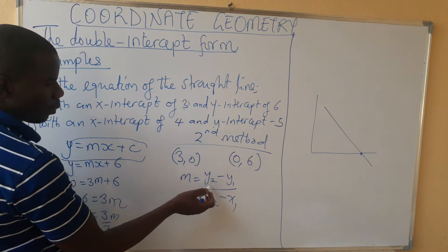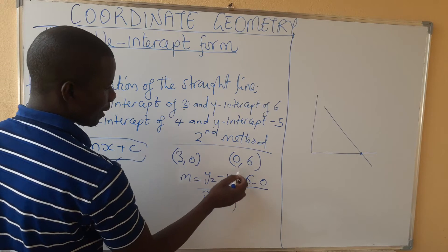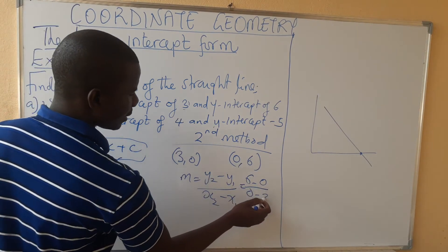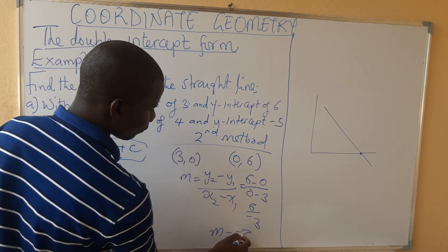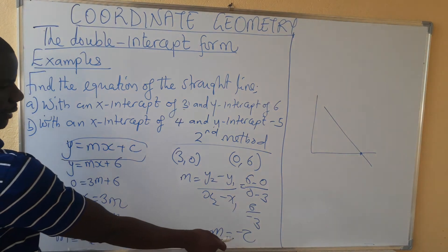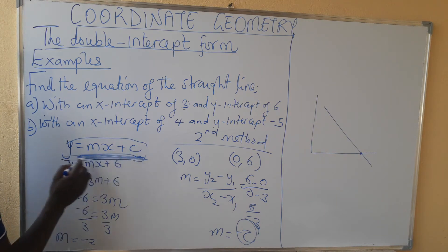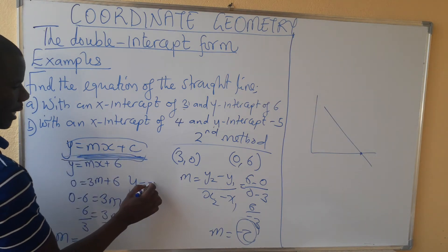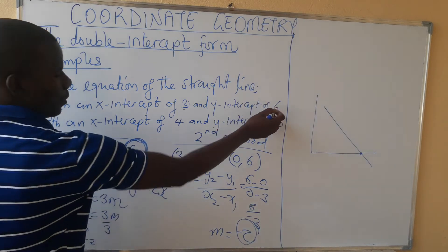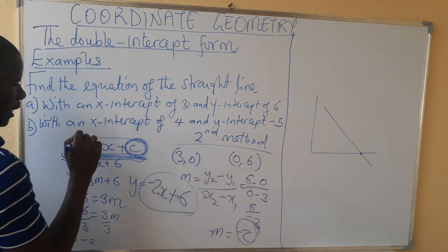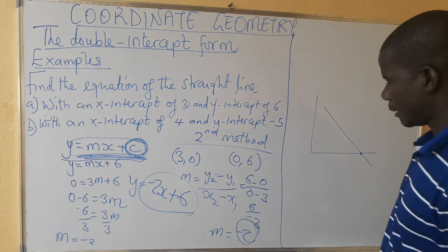Using the gradient formula: 6 minus 0 over 0 minus 3 gives 6 over negative 3, which equals negative 2. So our gradient is negative 2. Now we write our equation: y equals negative 2x plus 6, where 6 is the y-intercept. You can use either this method or the second one.